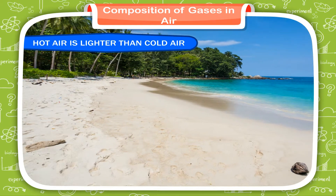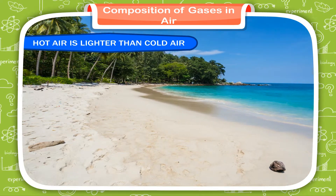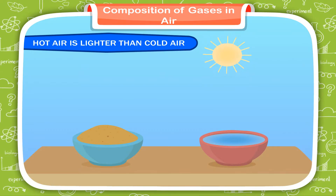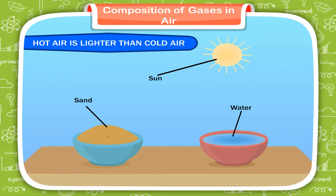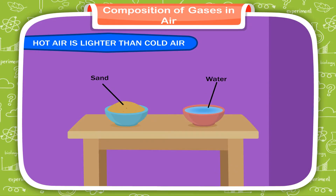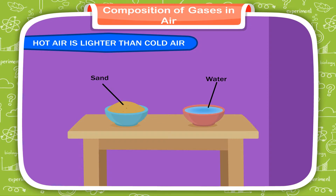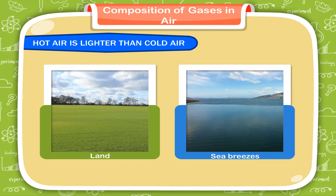Have you ever walked on a beach on a hot day? The sand is very hot but the water is cool. Take two bowls — fill one with sand and the other with water. Put them in the sunlight for one hour. You will find that the sand is hotter than the water. Now put the two bowls in a shady room for one hour. You will find that the sand is cooler than the water. This shows that sand heats up faster than water during the daytime and cools faster in the absence of sunlight. This natural phenomenon causes land and sea breezes.